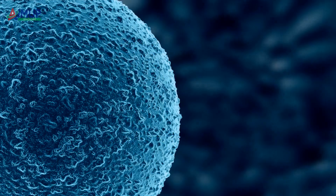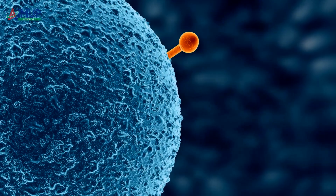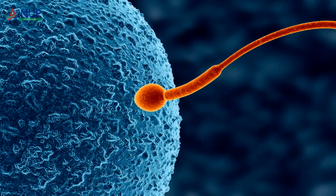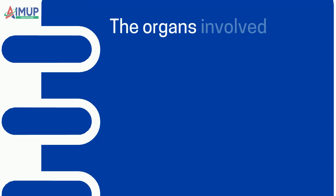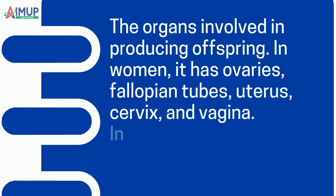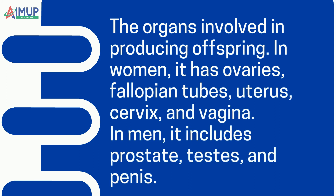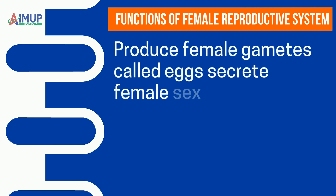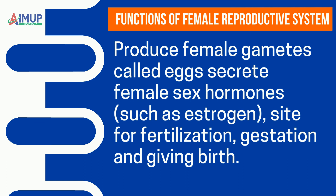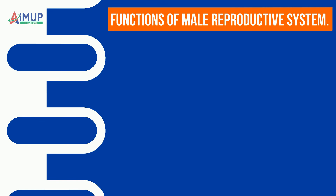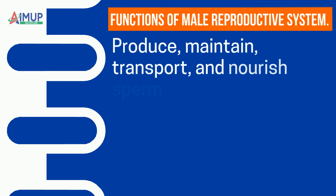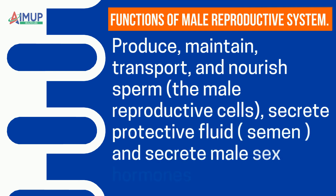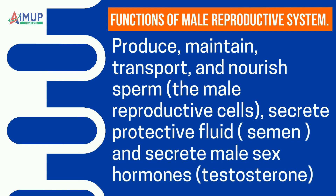The reproductive system consists of the organs involved in producing offspring. In women, it includes ovaries, fallopian tubes, uterus, cervix, and vagina. In men, it includes the prostate, testes, and penis. Functions of the female reproductive system include producing female gametes (eggs), secreting female sex hormones such as estrogen and progesterone, and serving as the site for fertilization, gestation, and giving birth. Functions of the male reproductive system include producing, maintaining, transporting, and nourishing sperm; secreting protective fluid (semen); and secreting male sex hormones such as testosterone.